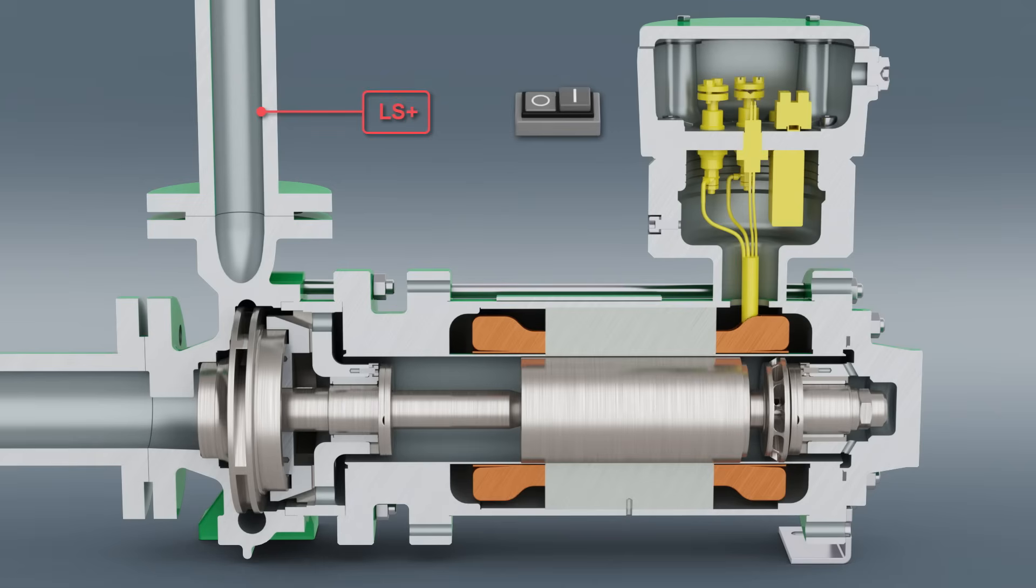The canned motor pump is filled through the suction nozzle. The fluid spreads in the pump as well as in the motor compartment and pushes the air through the discharge nozzle.